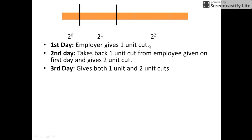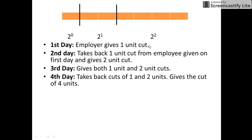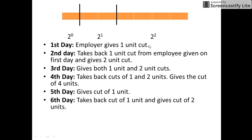At the end of the fourth day, the employer takes back the cuts of one unit and two units from the employee and gives the four-unit cut to the employee. At the end of the fifth day, he gives the one-unit cut to the employee.